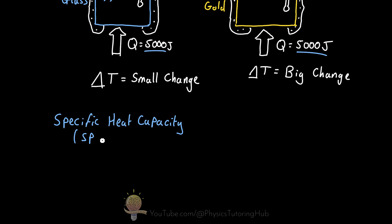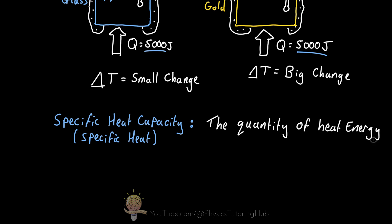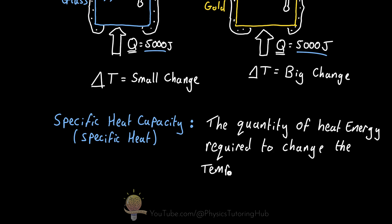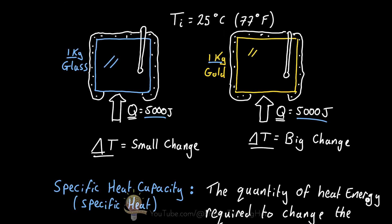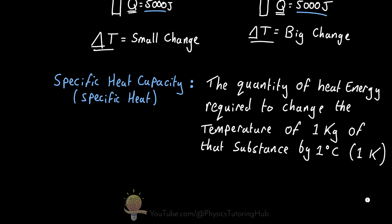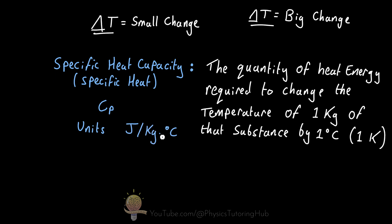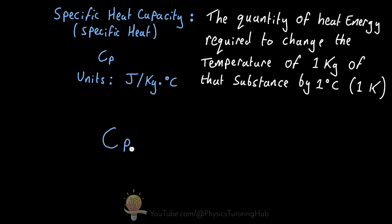This is also sometimes known as the specific heat. The specific heat of a substance is defined as the quantity of heat energy required to change the temperature of one kilogram of that substance by one degree Celsius or one Kelvin. Specific heat at constant pressure is normally symbolized as C with a subscript P, and this subscript indicates that the specific heat is measured at a constant pressure.